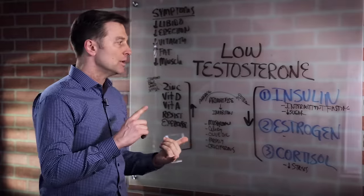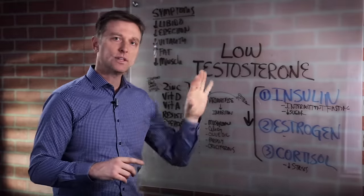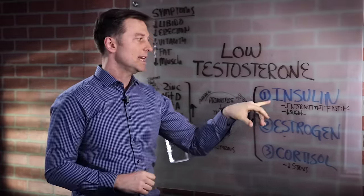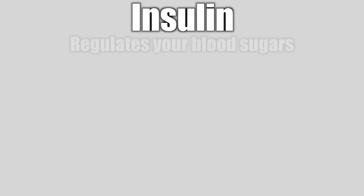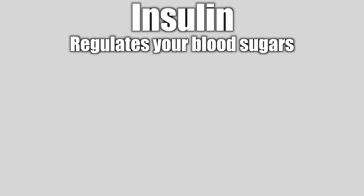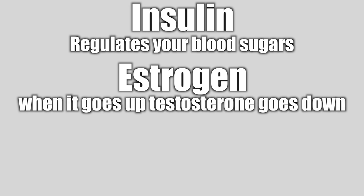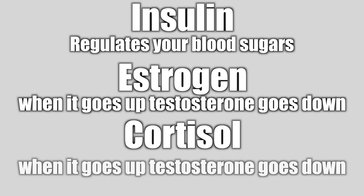There are three hormones that in the presence of these hormones, testosterone is going to plummet. Number one is insulin, which regulates blood sugars. Number two, estrogen. When estrogen goes up, testosterone goes down. And three is cortisol. When cortisol goes up, testosterone goes down.